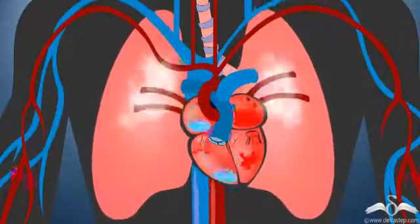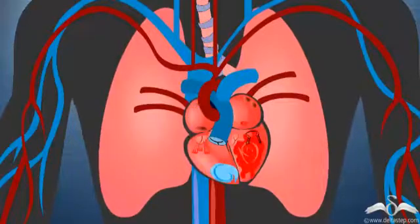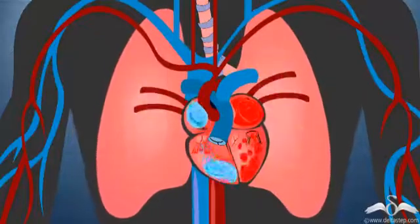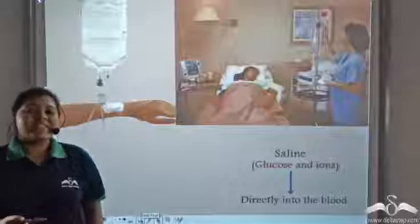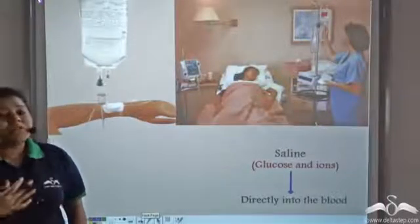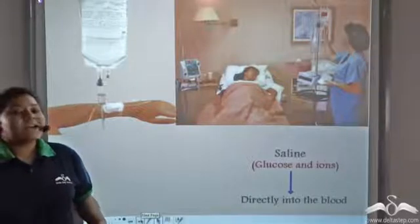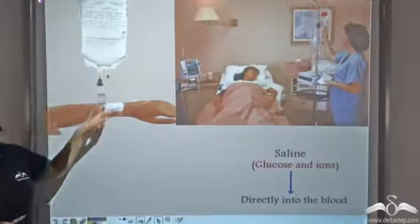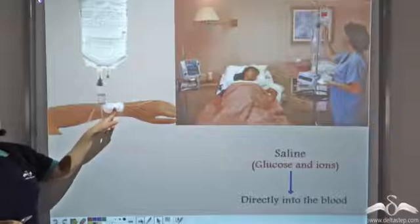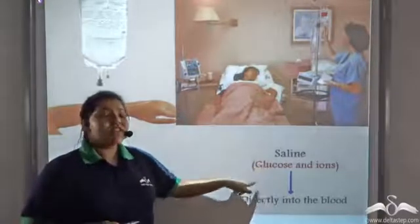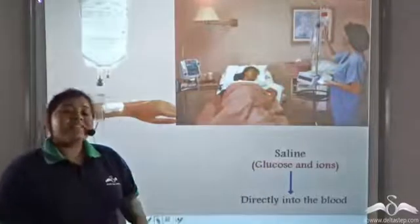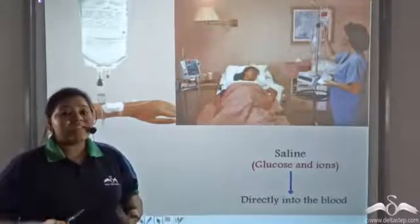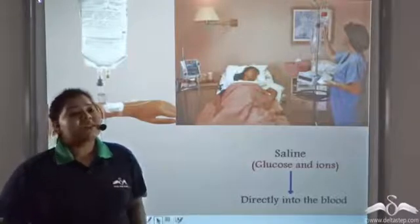Blood is a fluid connective tissue. It connects different parts of the body and transports various substances to different parts of the body. That is the reason patients who've had throat surgery or other surgeries and cannot consume food through the mouth are directly fed through channels on the hand, through which saline made up of glucose and ions is injected into the blood, and blood being a fluid medium transports the food to all parts of the body.